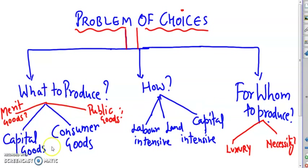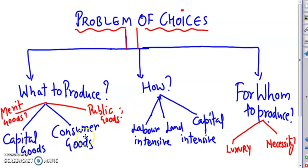What to produce relates to capital goods, consumer goods, public goods or merit goods. What type of goods or services should the economy produce? Should it produce producer goods, i.e., capital goods? Or consumer goods for the end user? Or public goods that are free, non-rivalrous and non-excludable?